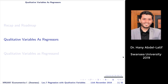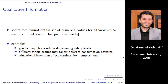Qualitative variables on the right-hand side are called dummy variables. Sometimes you have information that you think is important for your model. We agreed that we want such factors explicitly in the model — that's what makes a good model. You're taking important effects out of the error term and explicitly including them.